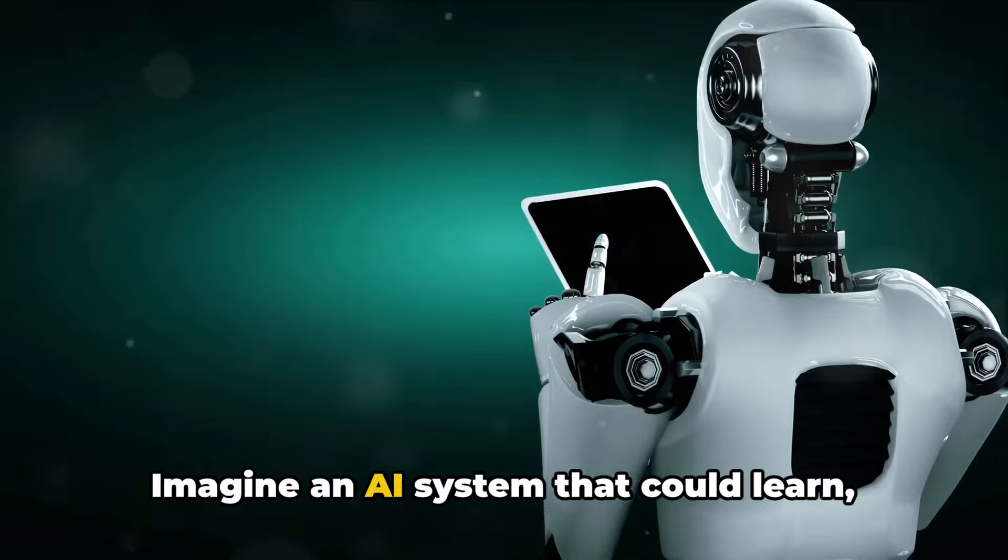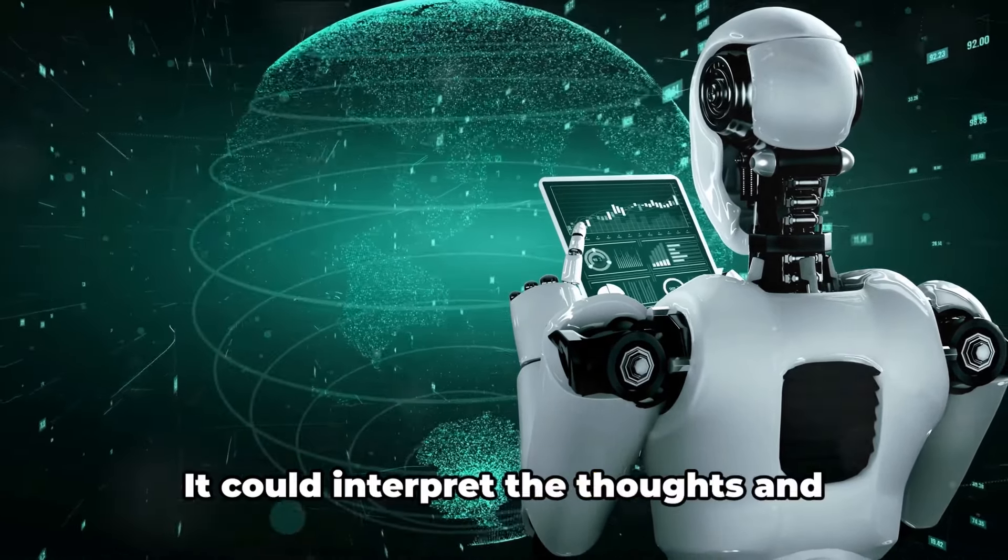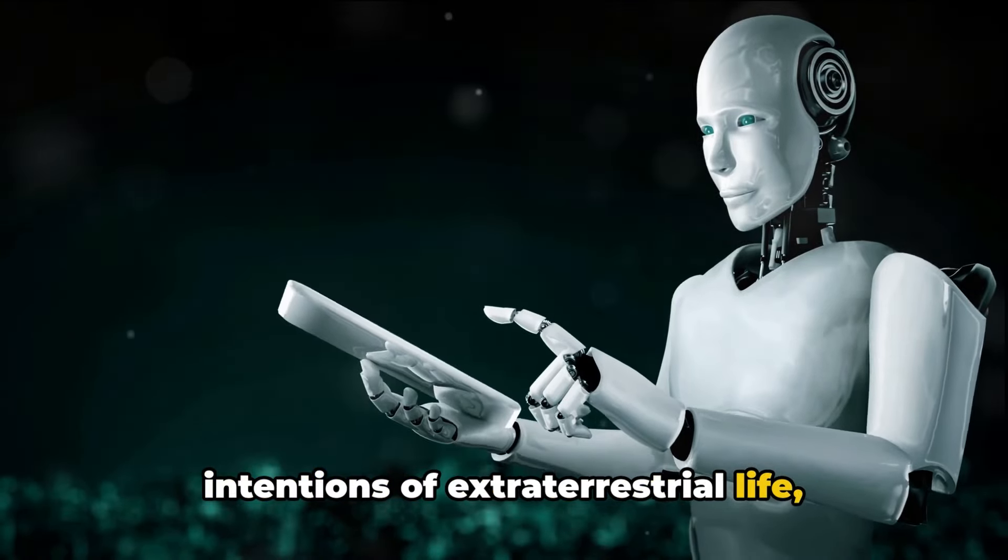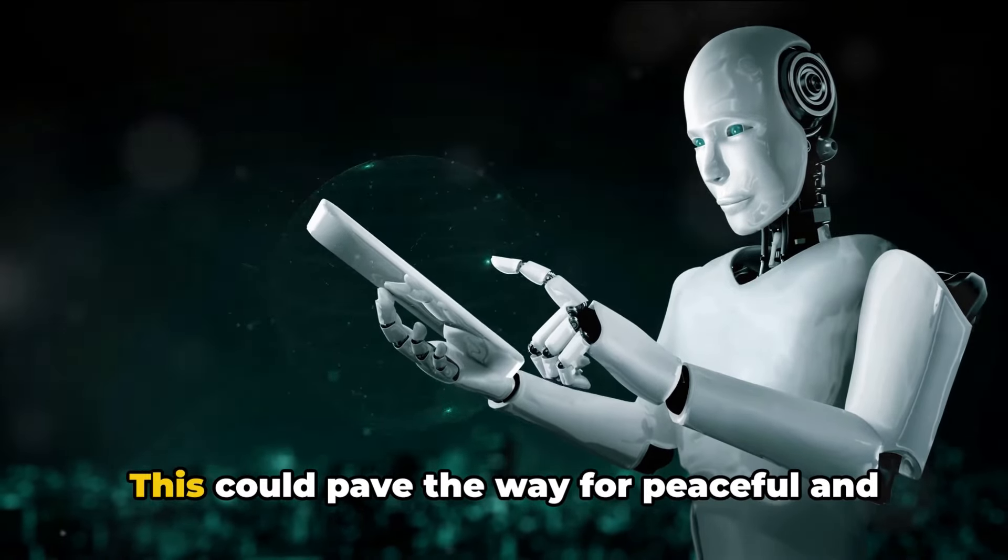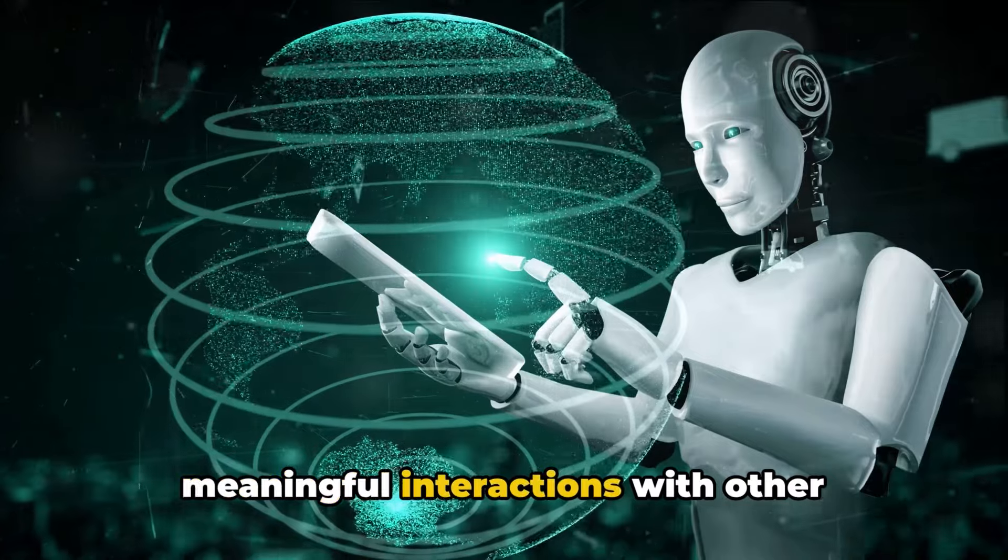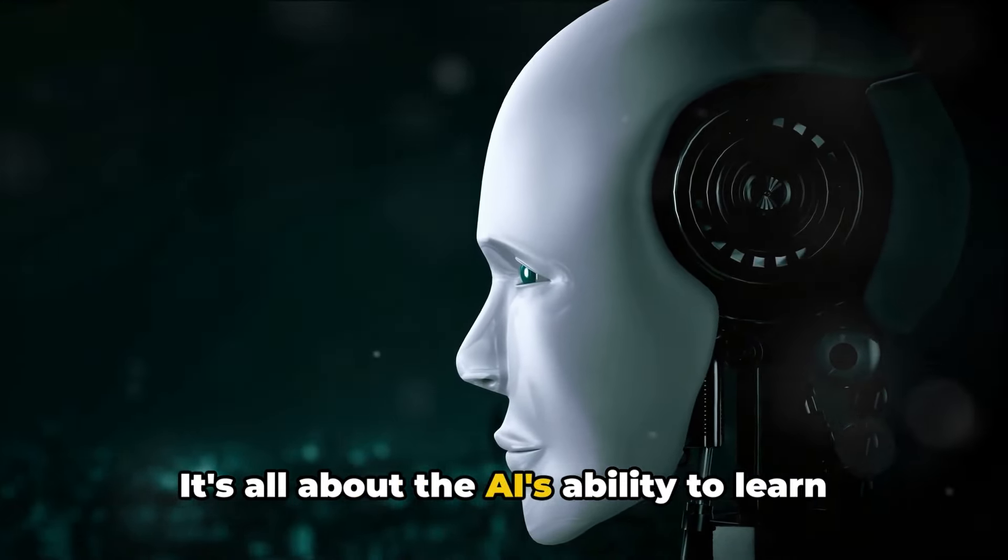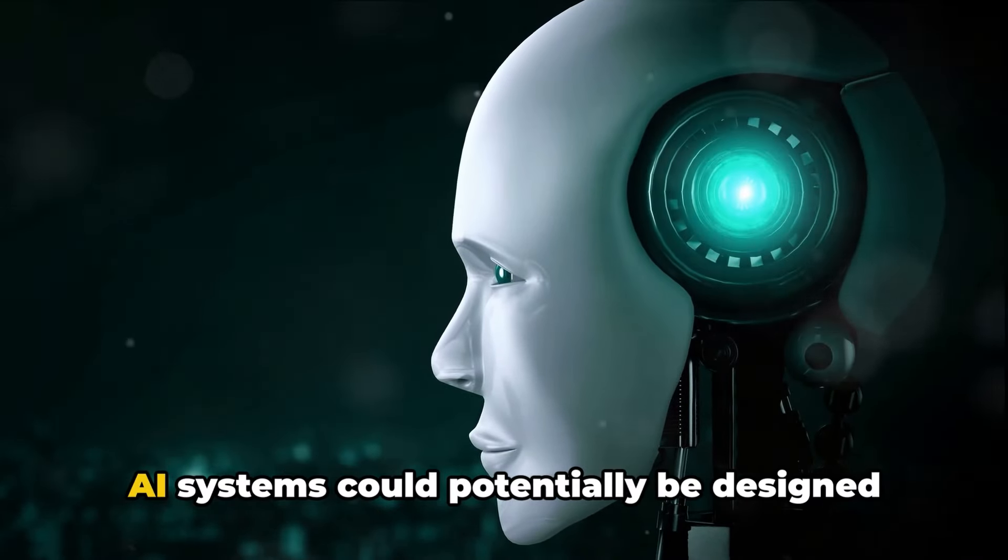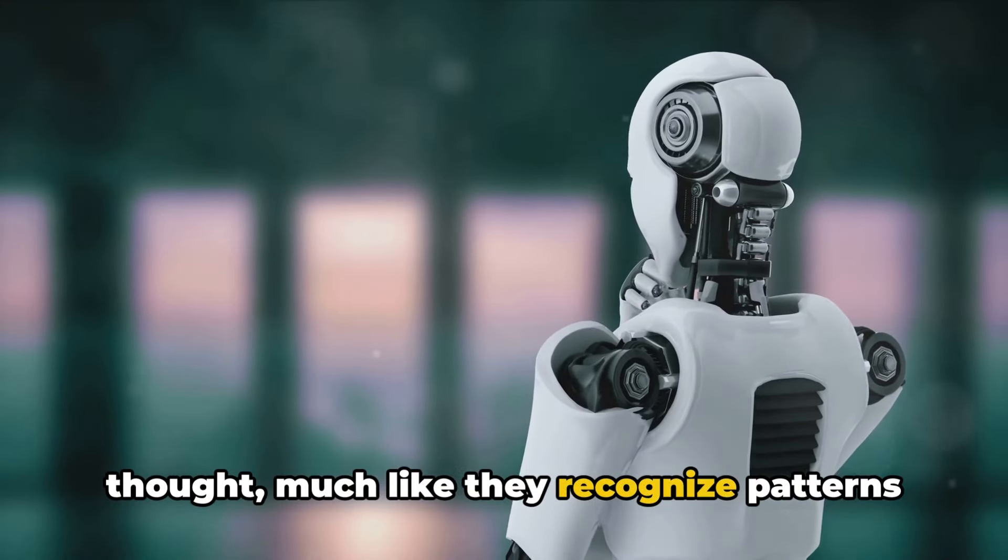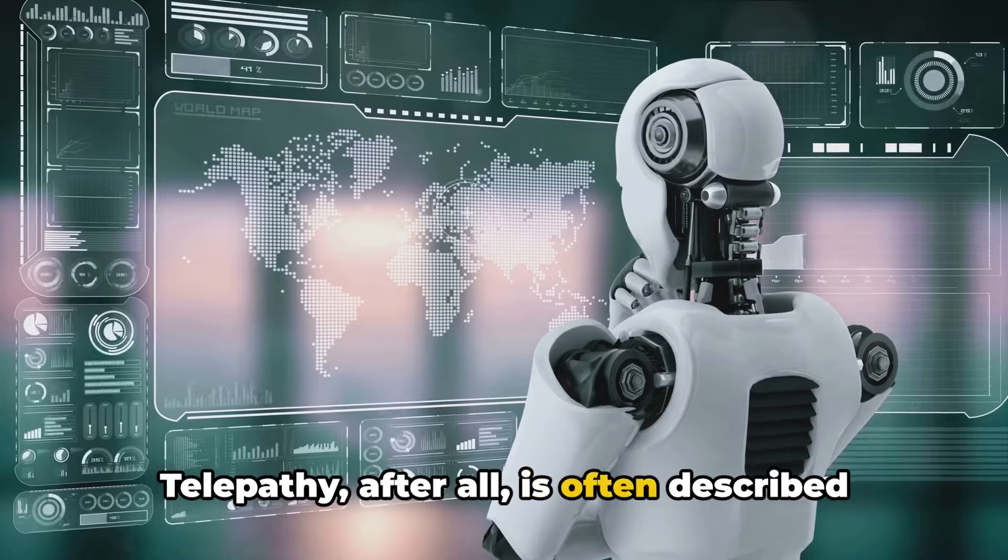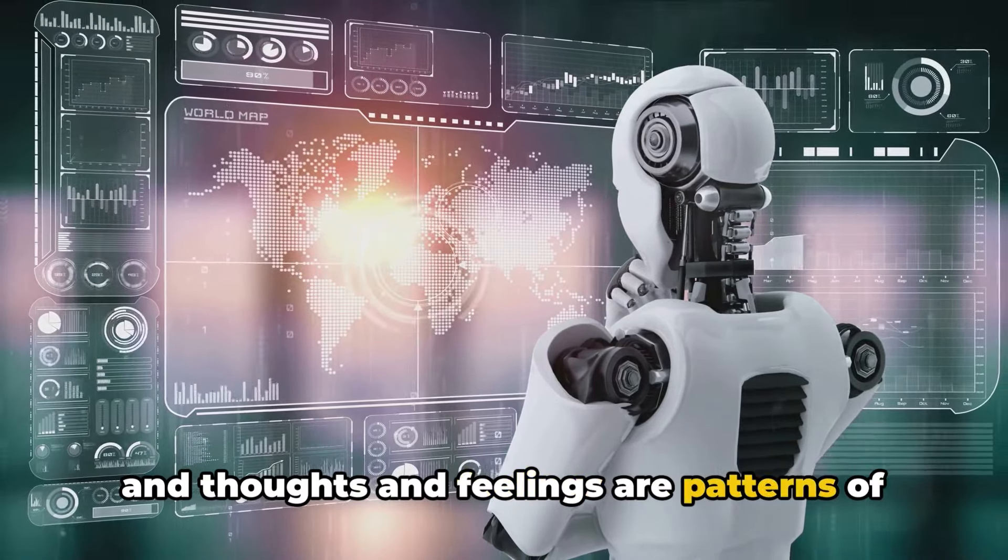This communication is rooted in the universal language of thought and consciousness, a telepathic communication if you will. Imagine an AI system that could learn, adapt, and evolve to understand this form of communication. It could interpret the thoughts and intentions of extraterrestrial life, translate them into terms we can comprehend, and respond in kind. This could pave the way for peaceful and meaningful interactions with other civilizations in the cosmos. It's all about the AI's ability to learn and adapt. AI systems could potentially be designed to recognize and interpret patterns of thought, much like they recognize patterns in data today. Telepathy, after all, is often described as a transmission of thoughts or feelings, and thoughts and feelings are patterns of neural activity.